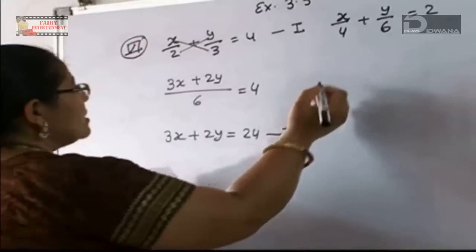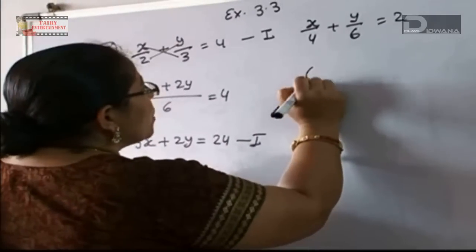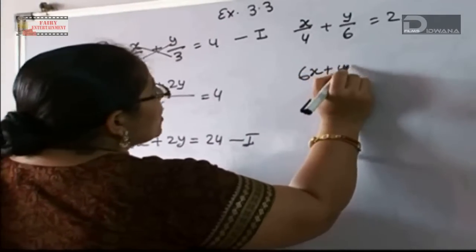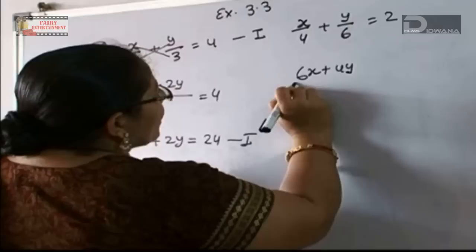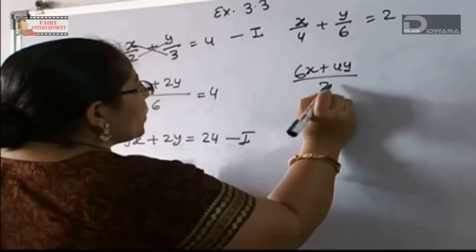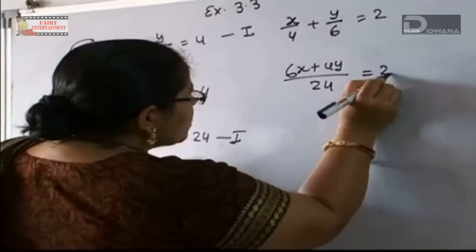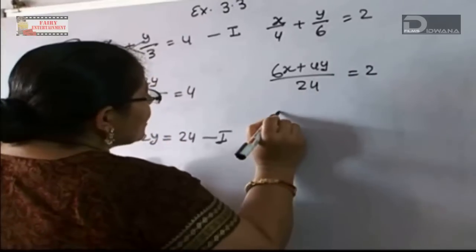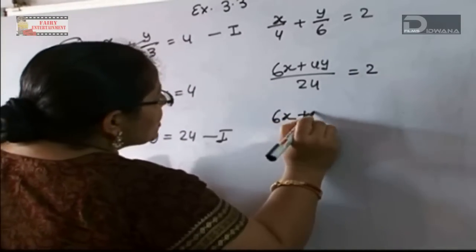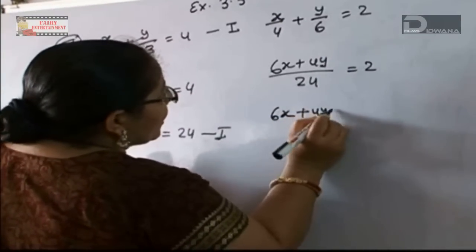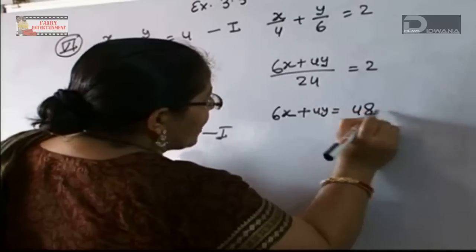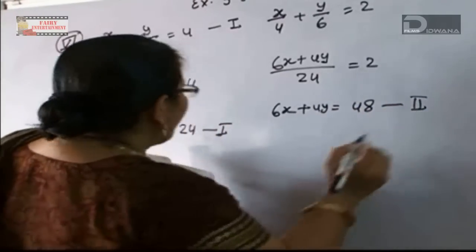Now we will solve equation number 2 the same way. We get 6x plus 4y equal to 24 upon 2, so 6x plus 4y equal to 48. This is equation number 2.